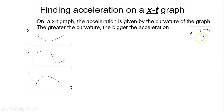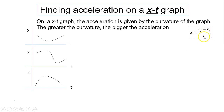Now, finding acceleration on the XT graph. On the XT graph, acceleration is given by the curvature of the graph — the greater the curvature, the greater the acceleration. Remember, slope on an XT graph represents velocity. Acceleration equals change in velocity divided by time. If Vf is positive and Vi is negative, acceleration is positive minus a negative divided by time, which is positive. Time interval can never be negative, so acceleration in this case has to be positive.